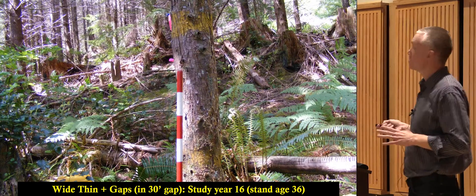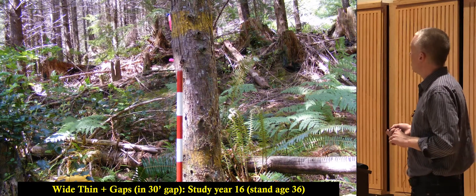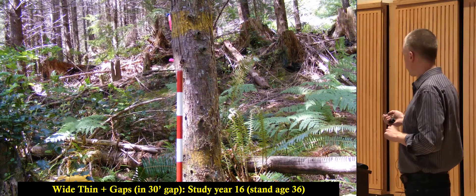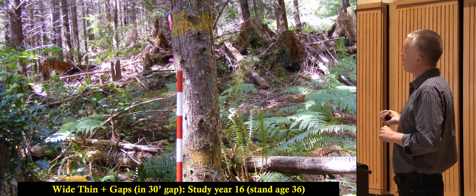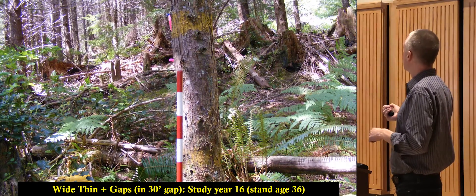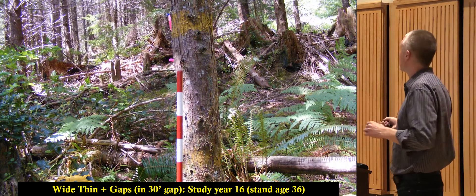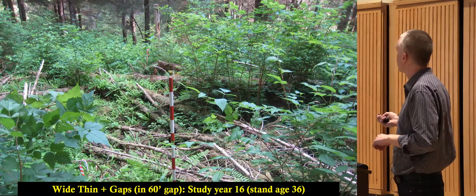This is our aggressive habitat enhancement treatment, the wide thinning down to 200 trees per acre, and this is a 30 foot gap. In contrast to that last 30 foot gap I showed you, there's actually a little bit of vegetation growing here still, and that's because the trees around the gap are less dense. The overstory is less dense around the gap.